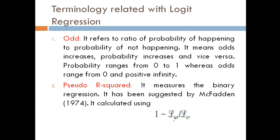There are some terminologies associated with logit regression that we need to understand while interpreting the results. First is odds. It refers to the ratio of probability of happening to probability of not happening. As odds increase, probability also increases and vice versa. Probability ranges from 0 to 1, whereas odds range from 0 to positive infinity.